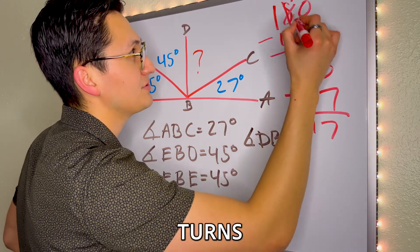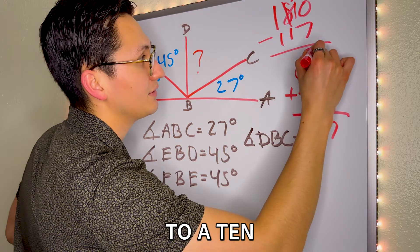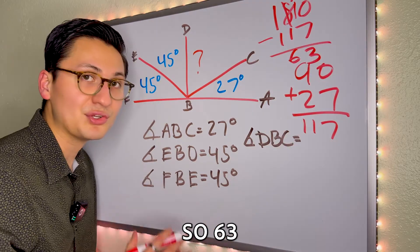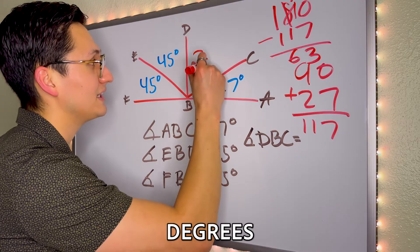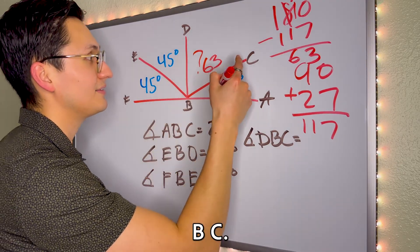Eight, we borrow, turns into a seven, zero to a 10, three, six. So 63 degrees is the angle D, B, C.